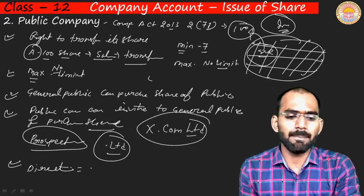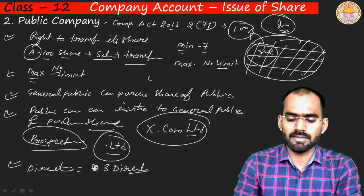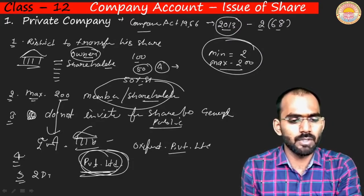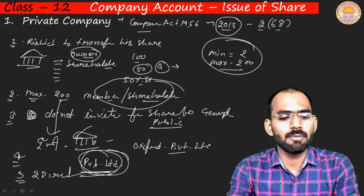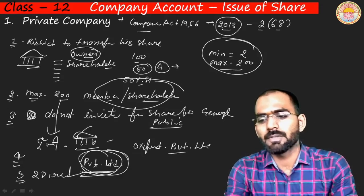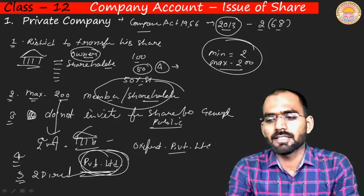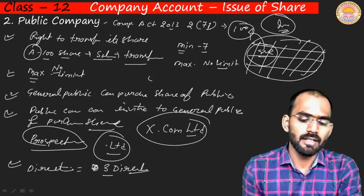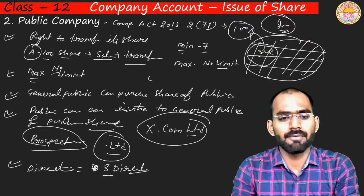Regarding directors: in a public company, the minimum number of directors is three. In a private company, a minimum of two directors is sufficient. So in case of directors, a private company requires at least two directors and a public company requires at least three directors.